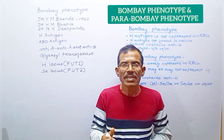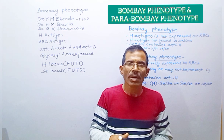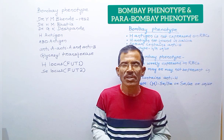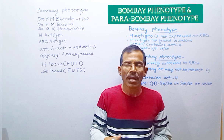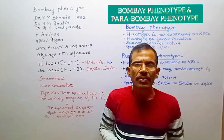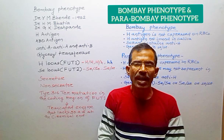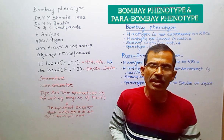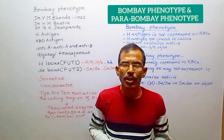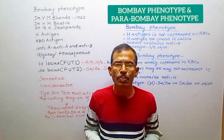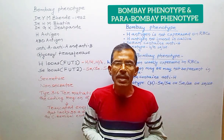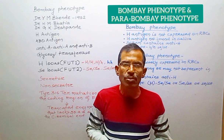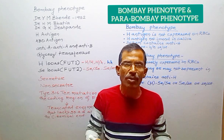Whereas in individuals with O blood group, the H antigen remains unmodified. Therefore, the H antigen is present in the highest amount in O blood group and in the least amount in individuals with AB blood group.